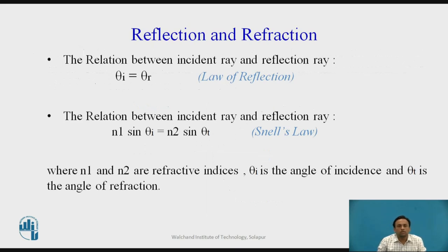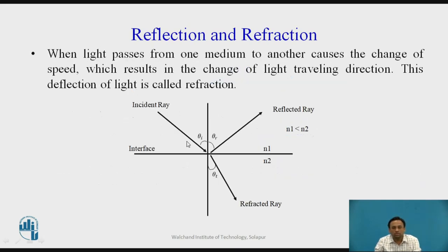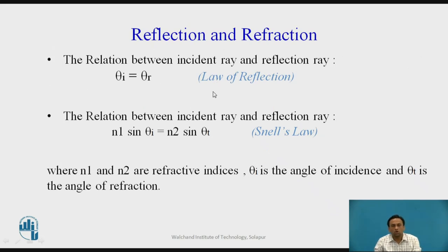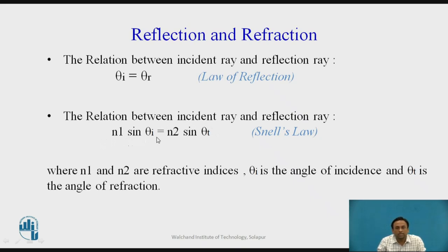The relationship between the incident ray and the reflected ray is that theta-i equals theta-r. As shown in the figure, the angle is the same on both sides. This is known as the law of reflection. Additionally, n1 sin(theta-i) equals n2 sin(theta-t), which is known as Snell's law.